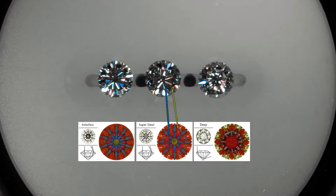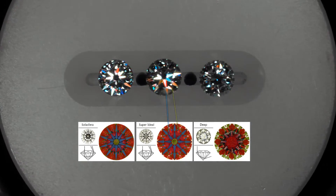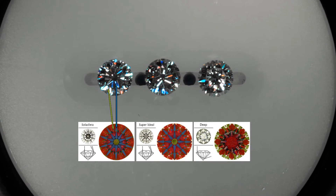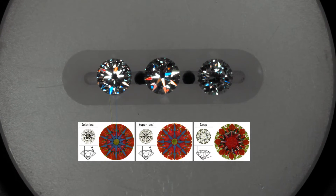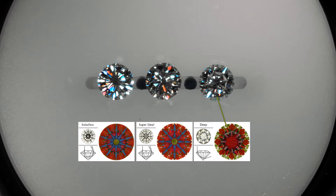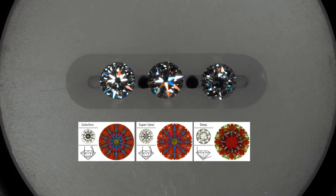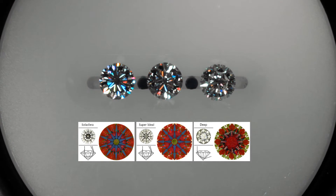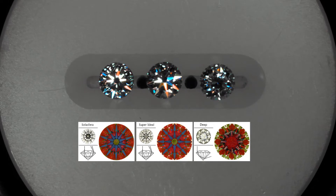areas or arrows, which gives it bigger fire, whereas the Solar Sphera has smaller blue areas or arrows, giving it smaller fire. The diamond on the right, which has no blue or contrast, has very little fire. Do note that fire can also come from the green areas on the ASET scope, however this is very minimal as it only appears in certain angles.